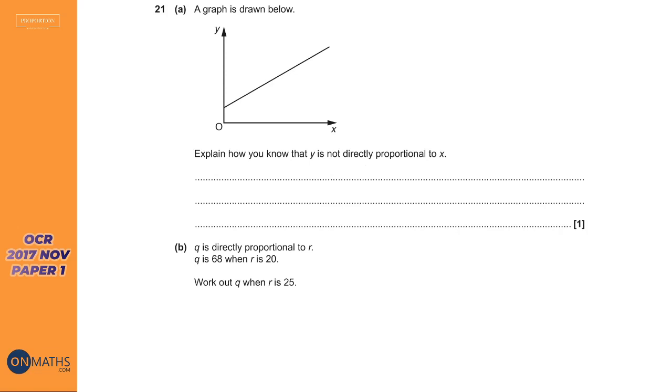Now, what's really important to understand is what does directly proportional mean? Everything we've been doing in this video so far have been things that are directly proportional. So if you have one of something that costs 30 pence or weighs 30 grams or whatever, if you have two of it, you'll have double as much, right?